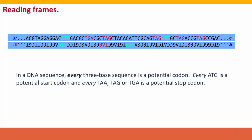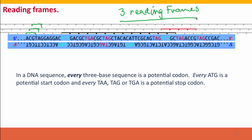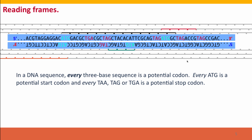A key concept for thinking about how genes specify proteins is that of reading frames. In principle, in a DNA sequence, every three-base sequence is a potential codon. But there are three ways to read any sequence, depending on which base you start at — reading frame one, reading frame two, or reading frame three, starting with different groups. So we have three potential reading frames going in one direction on a DNA strand, and another three reading frames in the other direction read from the other strand.